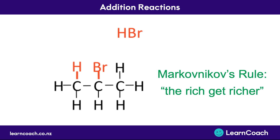This is very likely to come up in your exam, so remember: the rich get richer — attach the hydrogen to the carbon atom that already has the most hydrogens. This creates two different types of product. The major product is where the rich get richer, as described above. You also get a minor product: occasionally, in a small number of cases, the Br attaches to the rich carbon and the remaining hydrogen attaches to the middle one instead. This minor product doesn't happen very often.